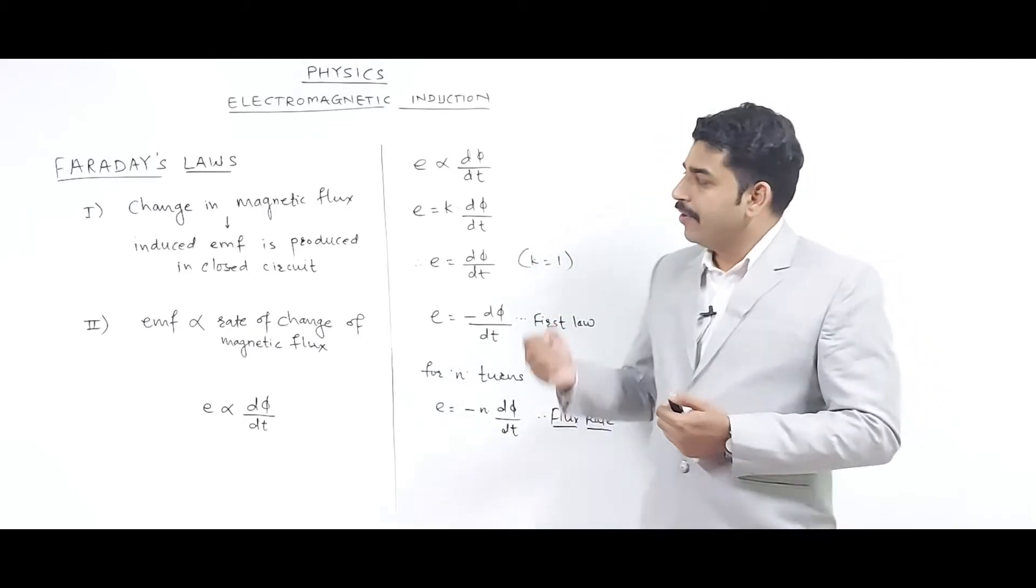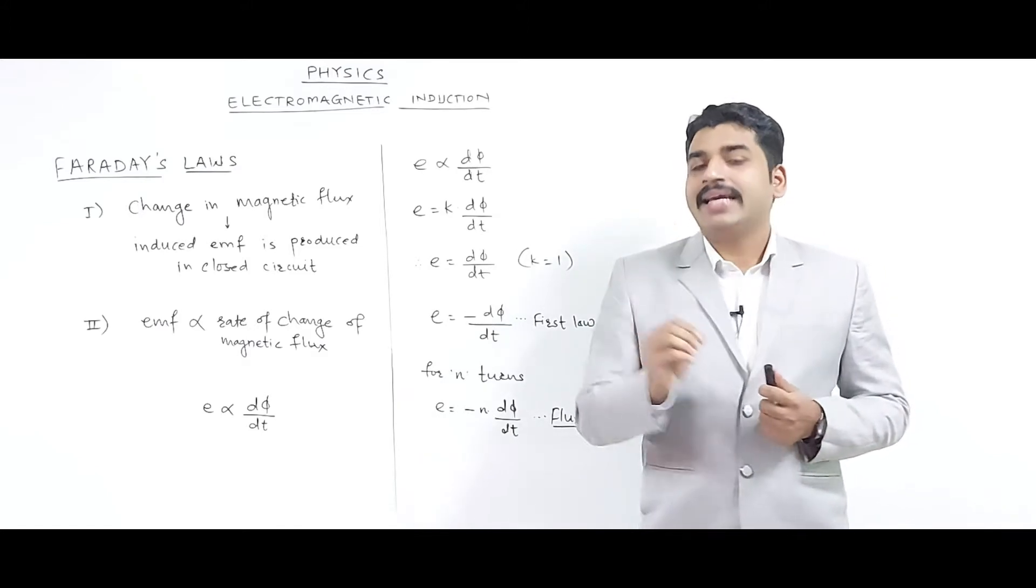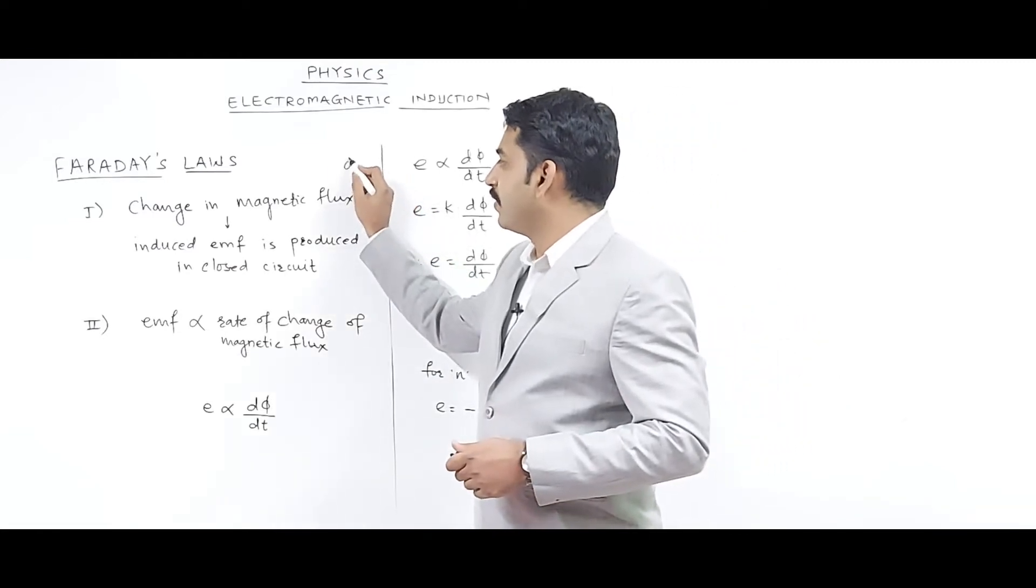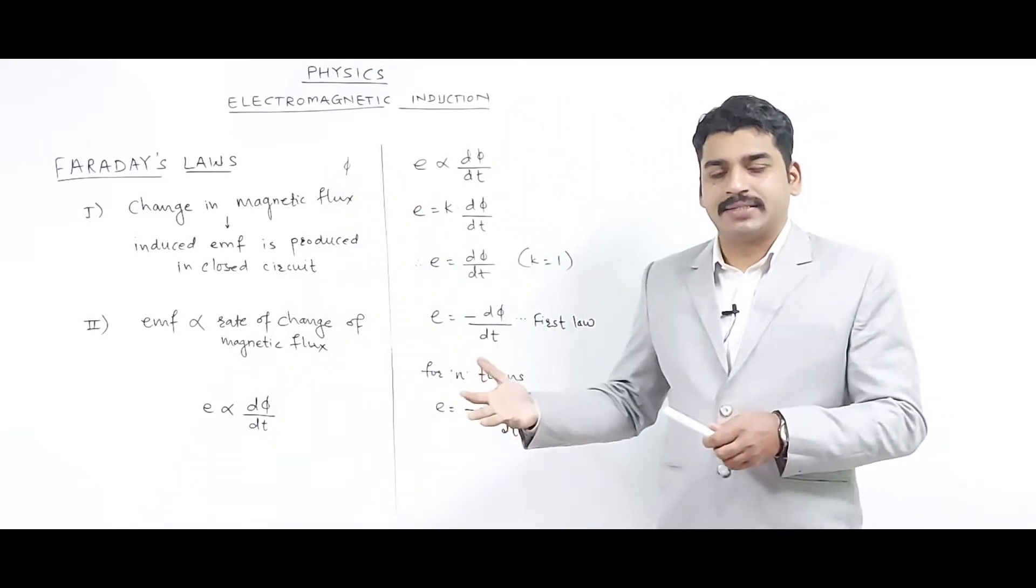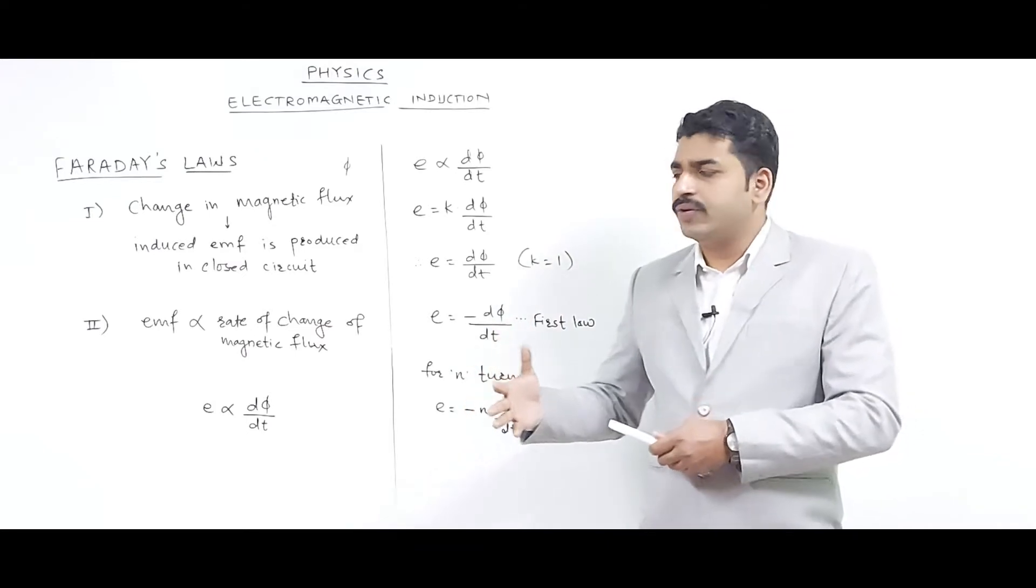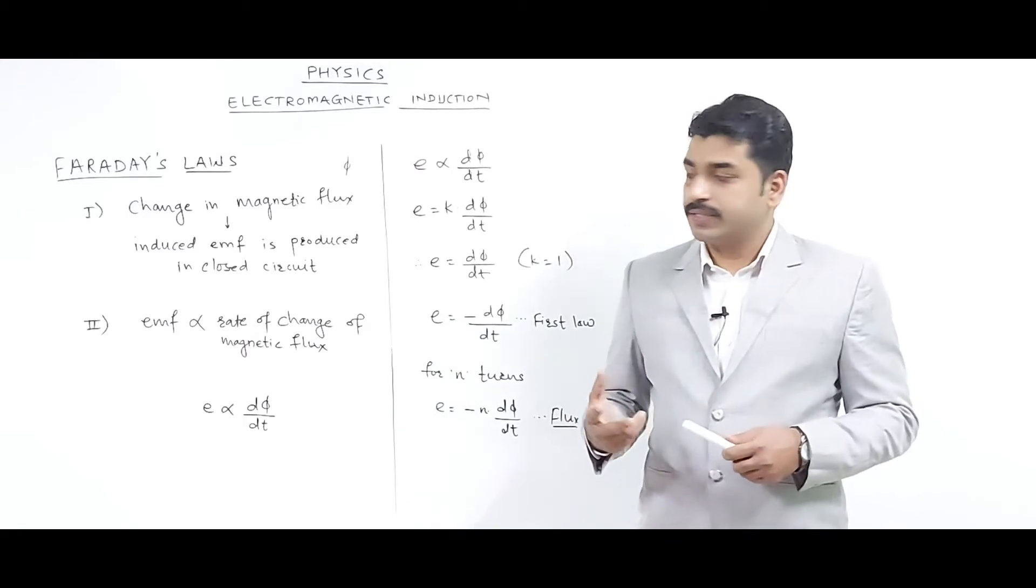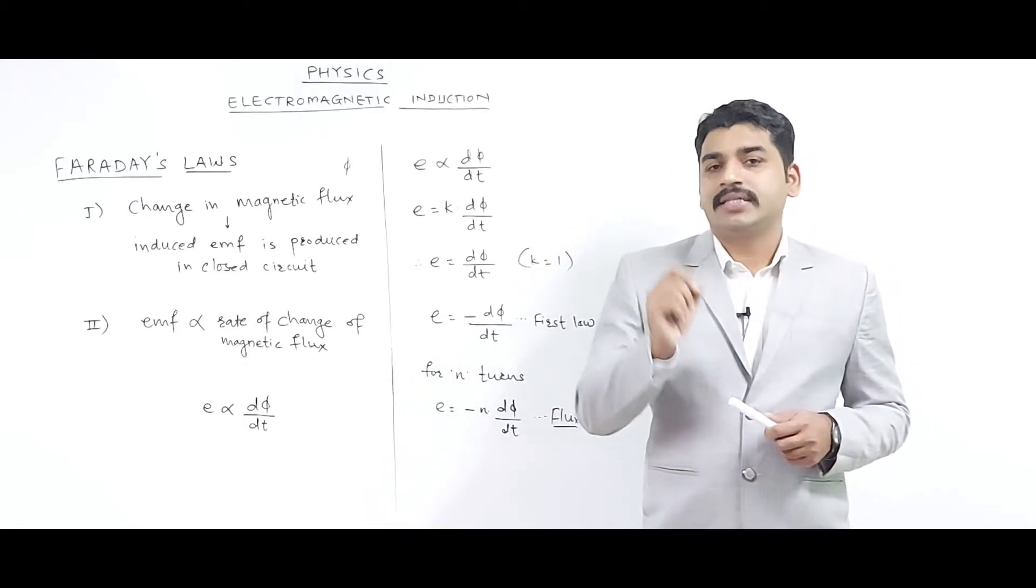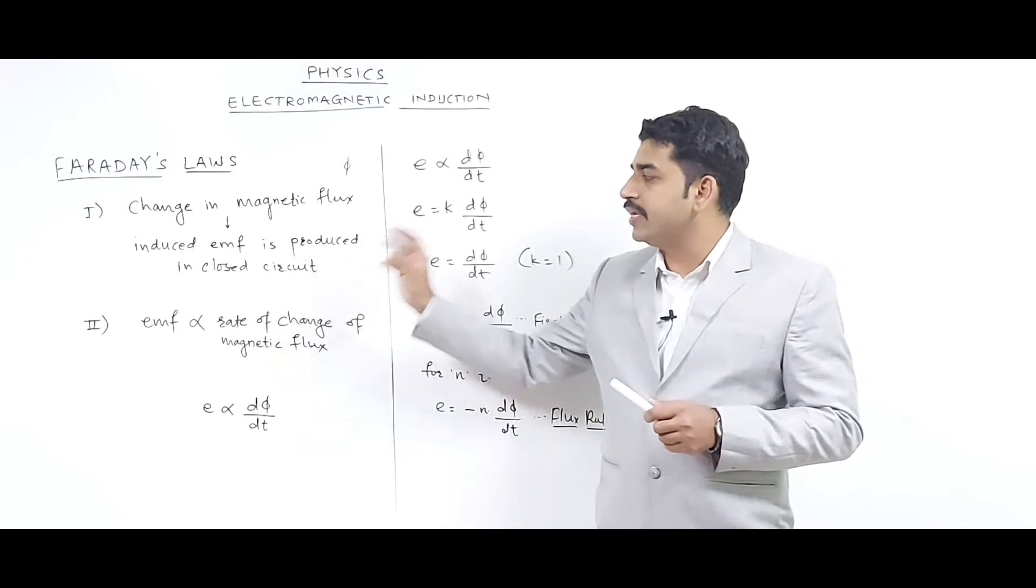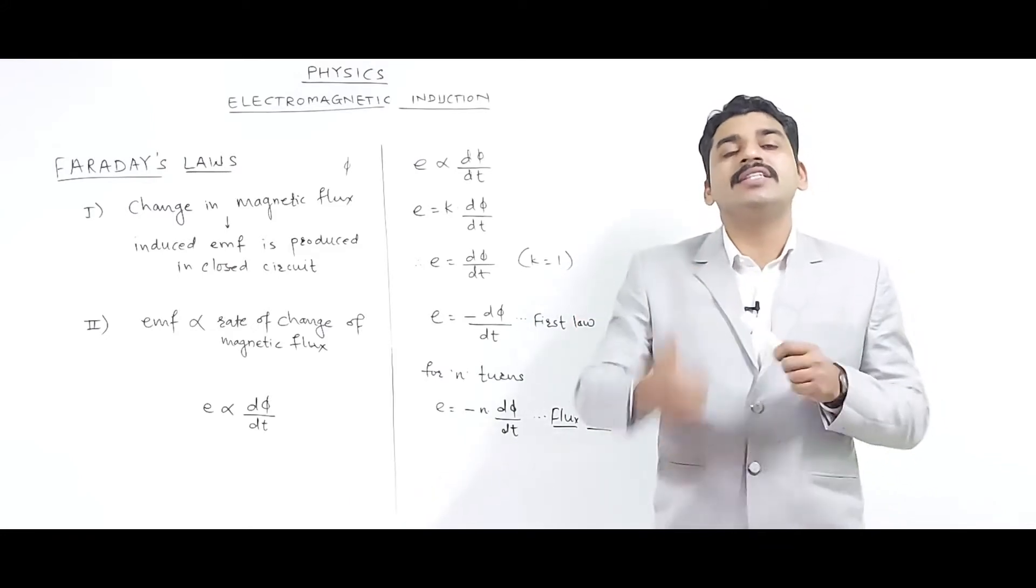Faraday's first law is called a qualitative law. Whenever in any closed circuit there is a change in magnetic flux - we all know magnetic flux means the magnetic lines, in short we can say number of magnetic lines - the magnetic flux, magnetic induction B, all these things you already know. Magnetic flux is denoted by Weber. So whenever there is a change in magnetic flux, there is induced emf produced in the circuit.